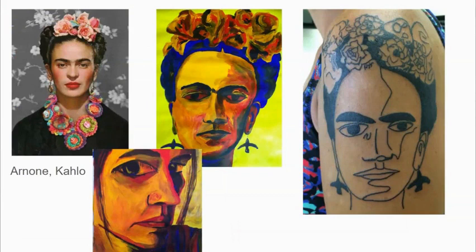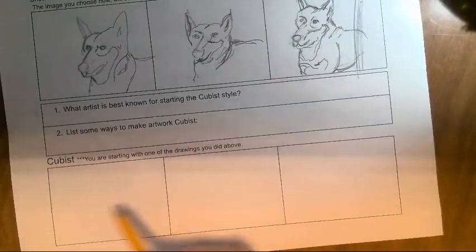This is the tattoo on the top of my arm. I was not meaning to do cubism — it happened by accident. I started with a photograph of Frida Kahlo, did a painting of her since I'm a painter, and my style is actually abstract expressionism. I took a photograph of the painting, printed it out, traced it to get a line drawing, and did about ten iterations between that tracing and what I actually got tattooed on my arm.